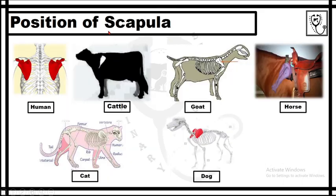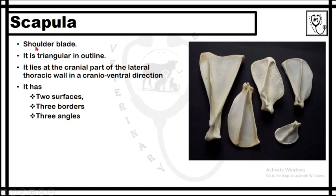These are the positions of the scapula in different species of animals — in humans, cattle, goat, horse, cat, and dog. The scapula is also known as the shoulder blade.